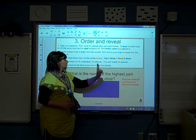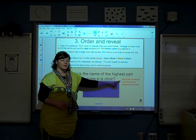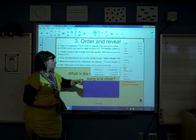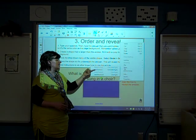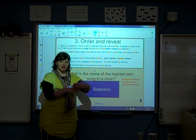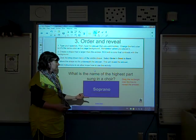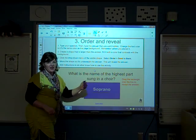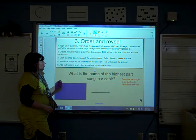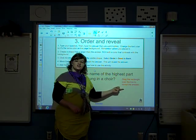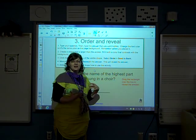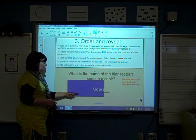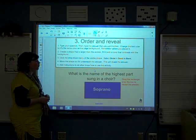As soon as we sent the rectangle to the back behind the text, the text appears — you can see the answer. Move the shape so it's underneath the answer; this will reveal your answer. I always like to double check and make sure that it does in fact cover the entire answer so that it can be revealed. Then add instructions to let others know how to use the activity. Here I added instructions in a red color to give the reader a heads up. The text simply says 'drag the rectangle over the line to reveal the answer,' giving someone the directions to find the answer which is soprano. And that is our order and reveal activity.